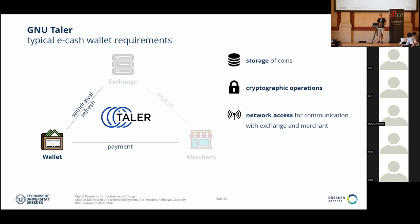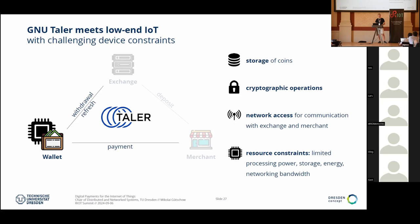If we envision payments in the IoT, we'd want a wallet on the device. The merchant role is simpler — it basically relays the token it gets to the exchange and keeps track of what it has received. But the wallet is the interesting part. For the wallet, there are three basic operations: storing the coins (key pairs with signatures), performing cryptographic operations, and accessing the internet to communicate with the other components. And if you want to bring this to an IoT device, there are resource constraints on top.